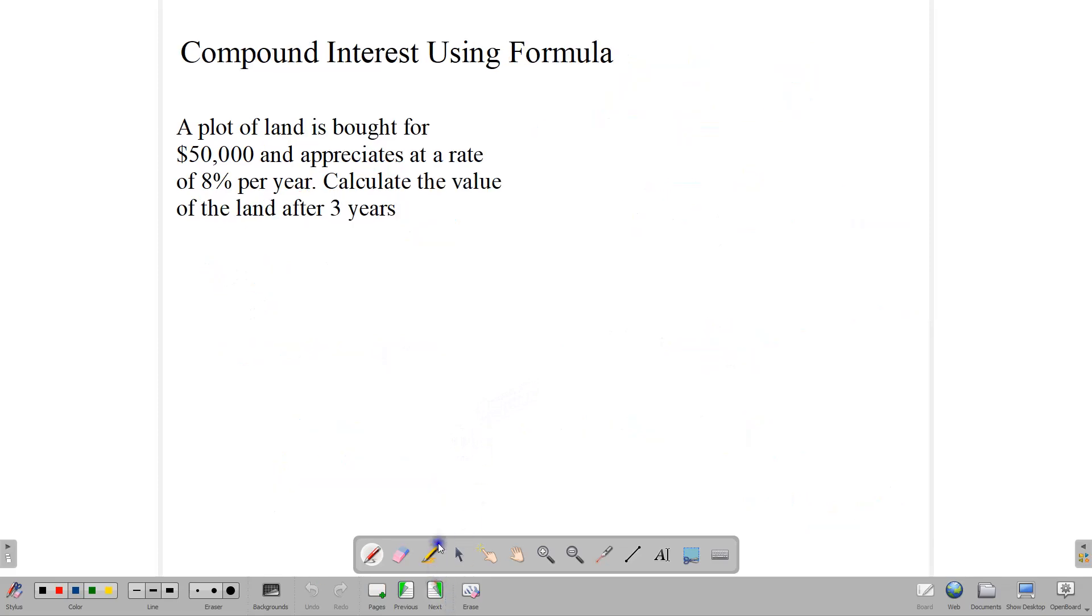The formula that I'm referring to looks something like this, where we write amount is equal to the principal times one plus the rate over 100. And that's raised to the n. Let me write these out. The a is the total value of whatever it is. Let's call it account or asset, whatever the thing is. And the R, as you should realize, would be the interest rate.